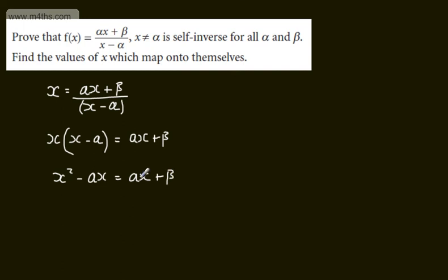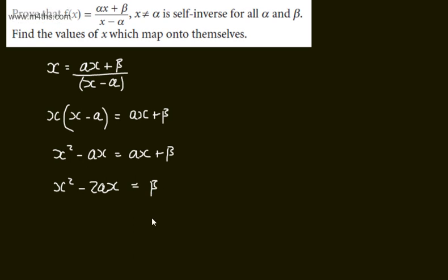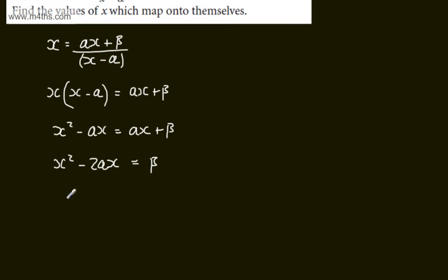At this stage, I'm going to subtract alpha x from both sides, so we have x squared minus 2 alpha x is equal to beta. I'm going to complete the square on the left-hand side — you could subtract beta from both sides, but we'll end up adding it to the other side anyway. Completing the square: x minus alpha all squared minus alpha squared is equal to beta.